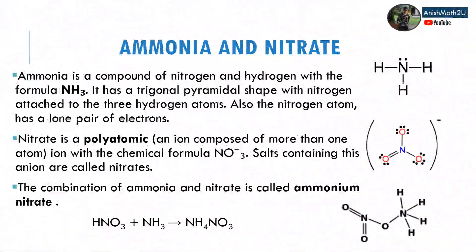Ammonia is a compound of nitrogen and hydrogen with the formula NH3. It has a trigonal pyramid shape with nitrogen attached to three hydrogen atoms. The nitrogen atom also has a lone pair of electrons.